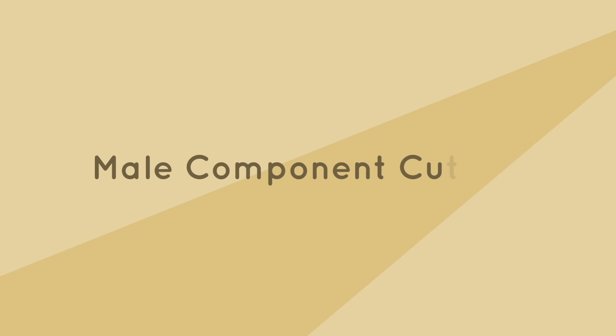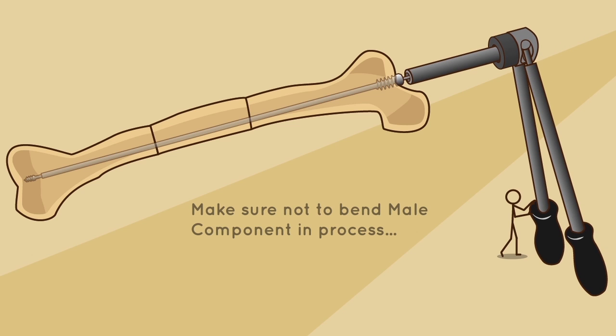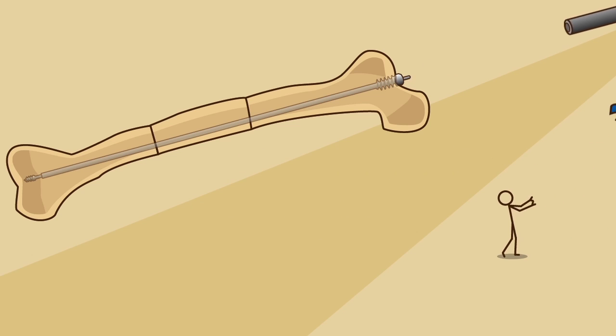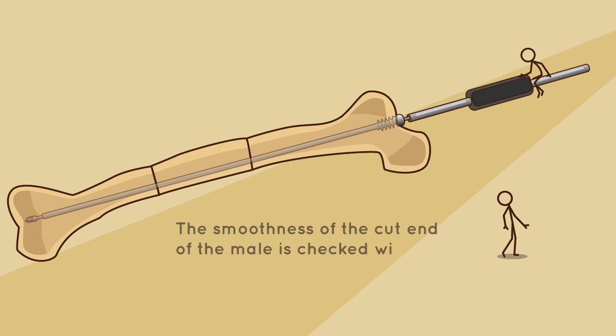Male component cutting. The male component is cut with the male cutter MC-200, making sure not to bend the male component in the process. The smoothness of the cut end of the male is checked with the probe of appropriate size.